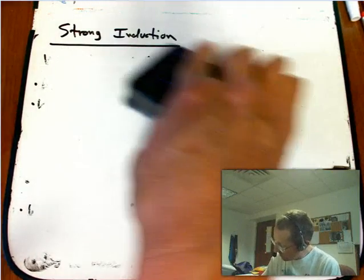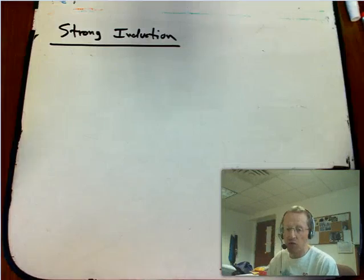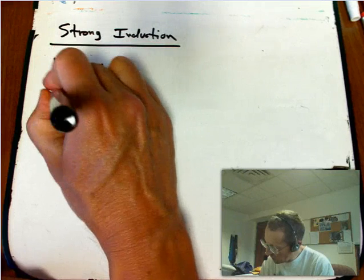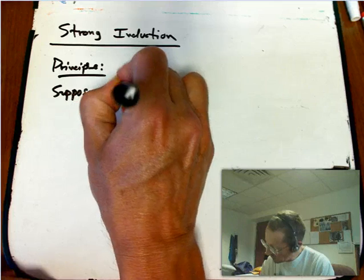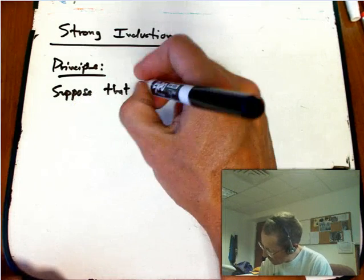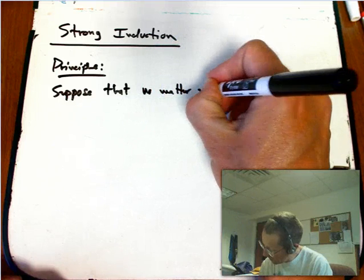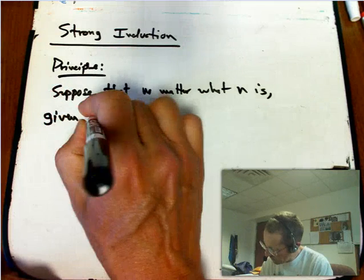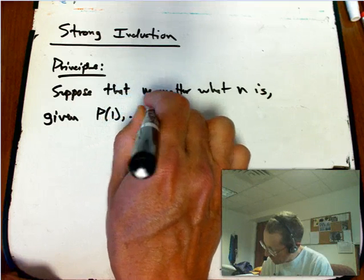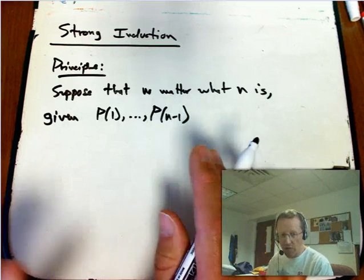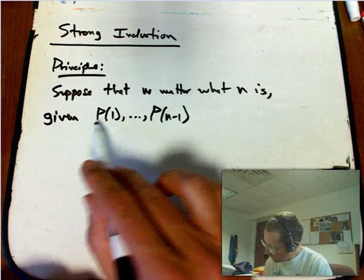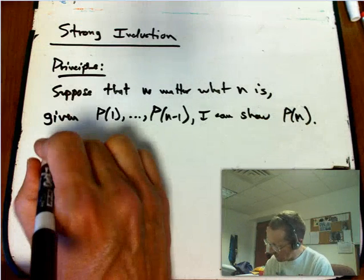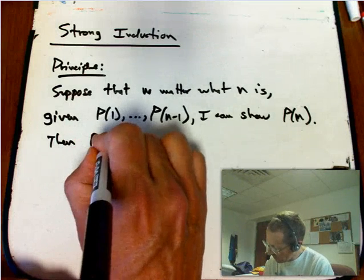So how does that get written up? This is a slightly different use of the k and n terminology. So here's the principle. Suppose that no matter what n is, it's a positive integer though. Given P(1) through P(n-1). I'm going to tighten this up a little bit and make it more like what the book says. So that no matter what n is, given P(1) through P(n-1), I can show P(n). Then, in fact, P(n) is true for all n.